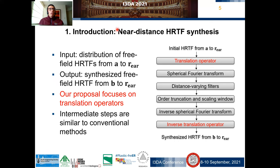Here is an overview of near-distance HRTF synthesis. The input is a distribution of free-field HRTFs from point A to R. The output is a synthesized free-field HRTF from point B to R. Our proposal focuses on the translation operators — the first and last steps — marked on the schematic on the right side of the slide. The intermediate steps, that is, the SFT, distance variant filters or DVFs, order truncation and scaling window, and the ISFT, are similar to conventional methods.